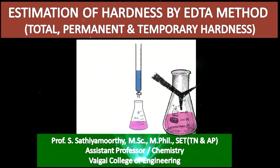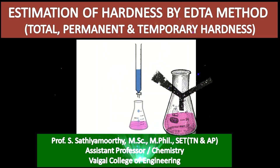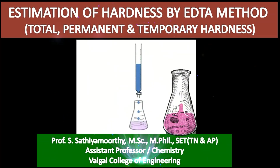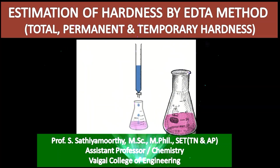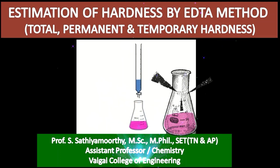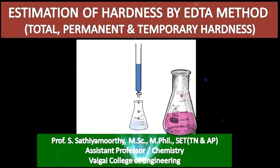In this method we are going to estimate total, permanent, as well as temporary hardness. Earlier we have learned that hard water is detected using EBT indicator in the pH range 8 to 10. We are going to utilize the same principle here along with the complex formation by EDTA.